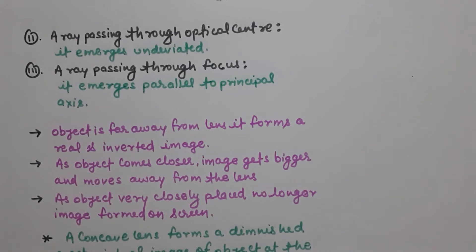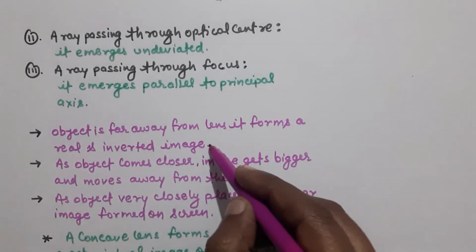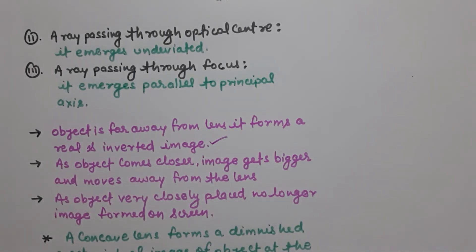Now see, in case of convex lens, object is far away from lens, then it forms a real and inverted image. As object comes closer, the image gets bigger and also it moves away from the lens.